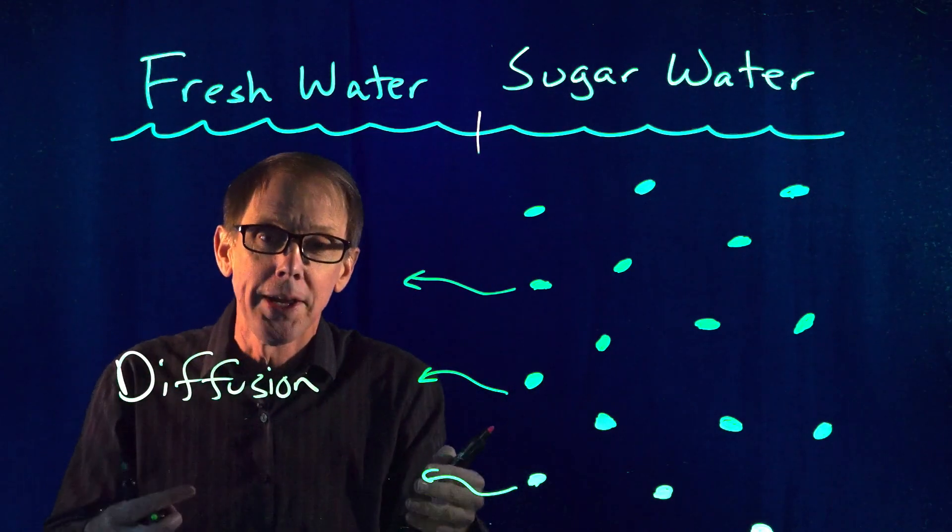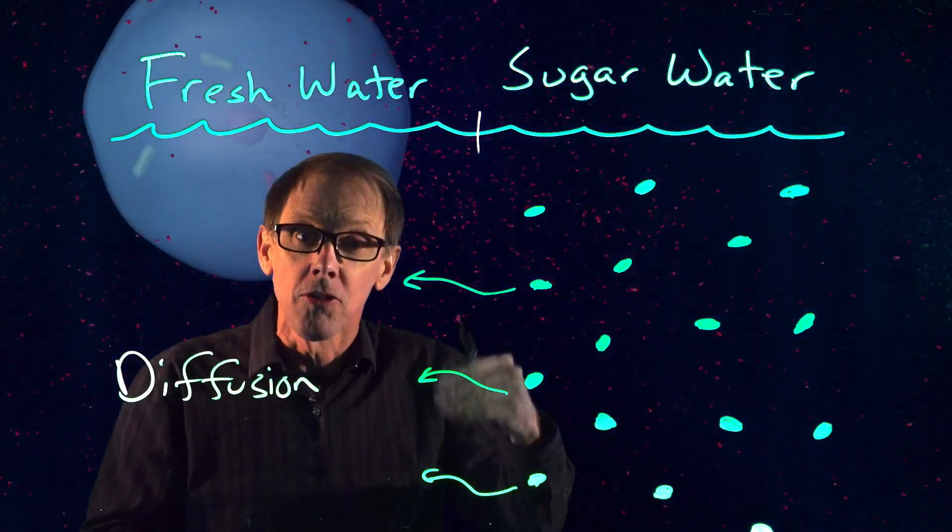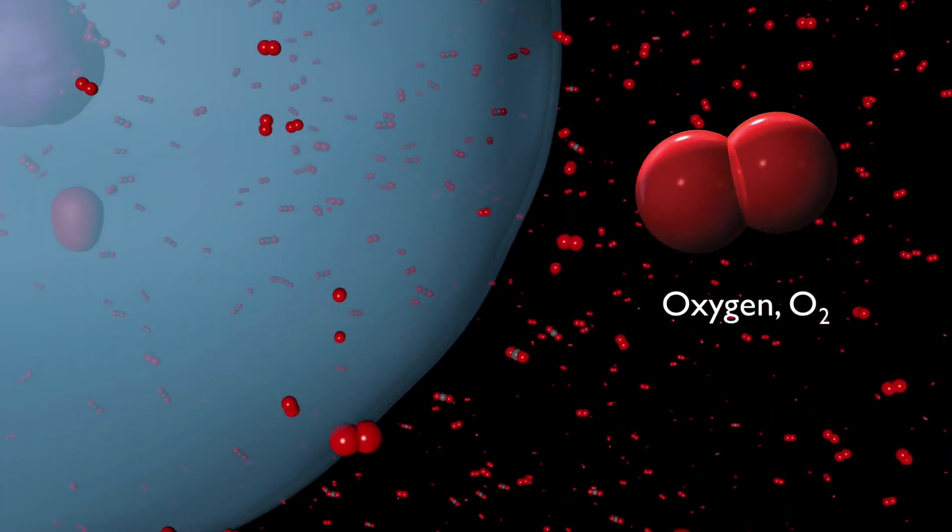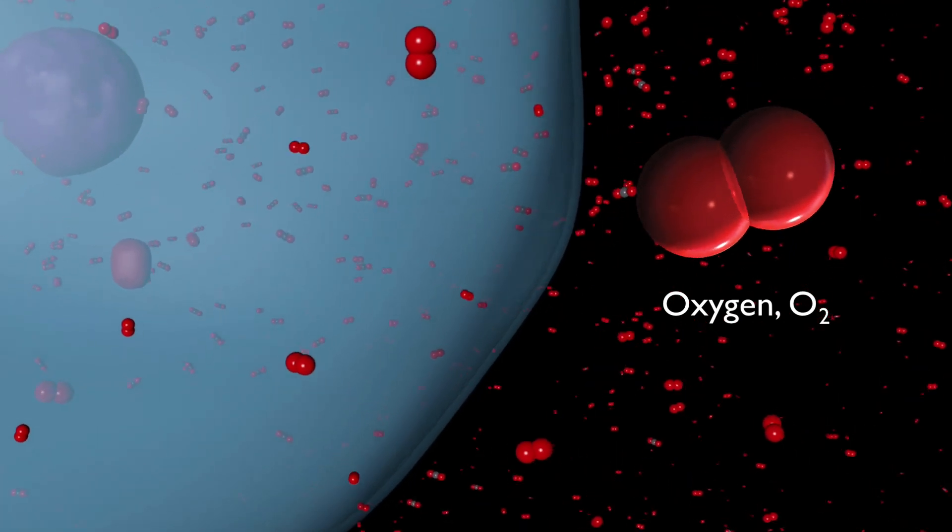Diffusion explains how it is that oxygen can get into our cells. Outside the cell, the environment is rich in oxygen, thanks to the action of hemoglobin in our blood.